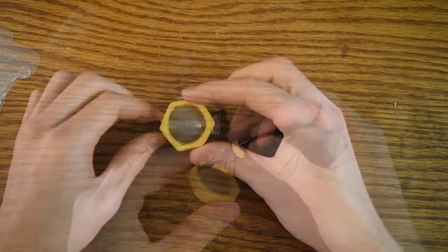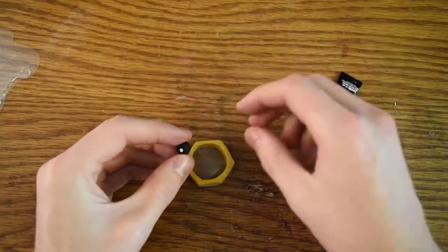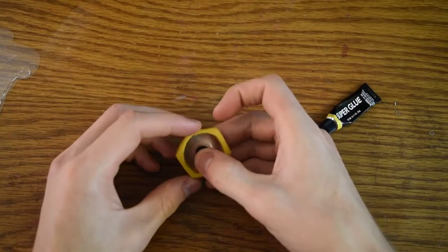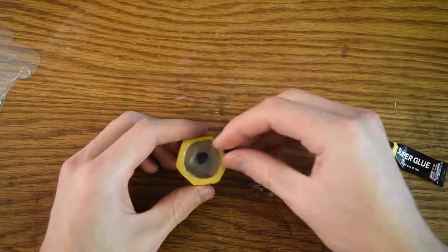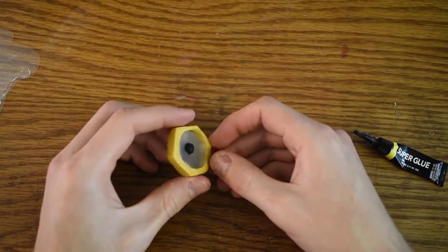We can see that it's pretty transparent. It's a little bit cloudy, but it's pretty decent. Let's put the eye on there, and now the back of the eye. We can super glue this whole head right onto the body.